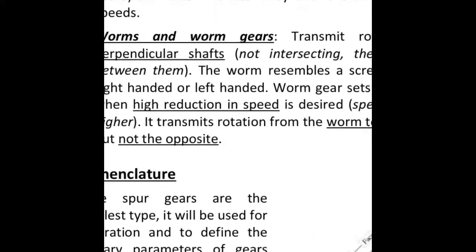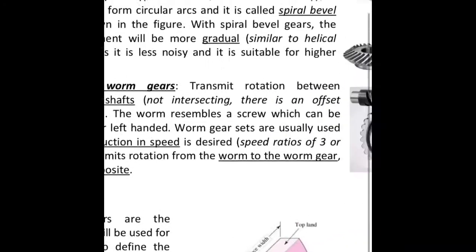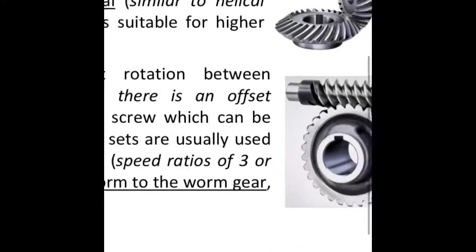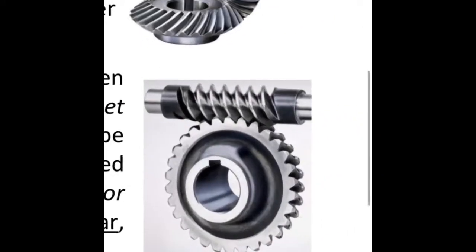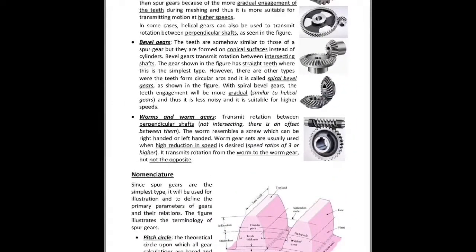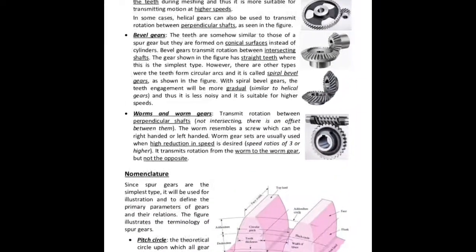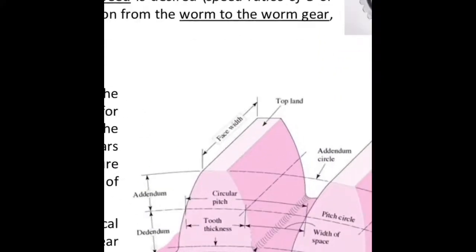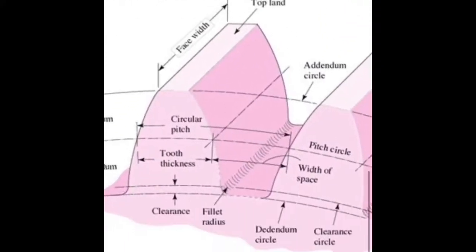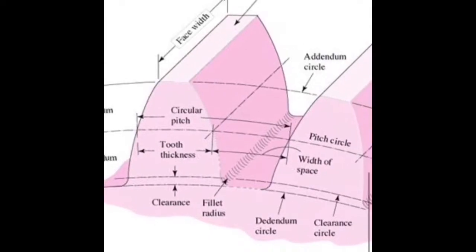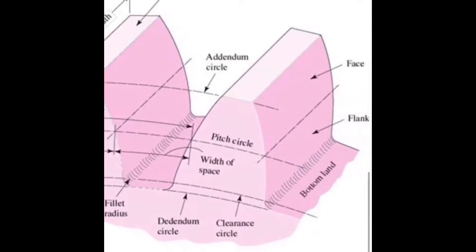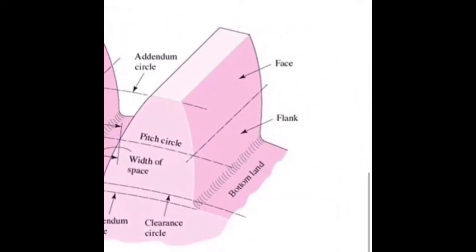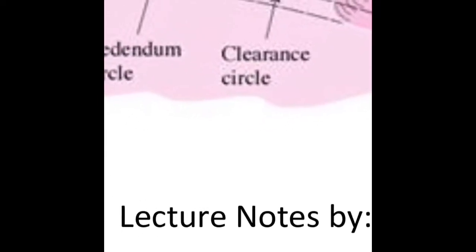As shown in the figure, such an arrangement is referred to as rack and pinion, and it is commonly used in the steering systems of automobiles. Types of gears: there are four principal types of gears. Spur gears are the simplest type. The teeth are parallel to the axis of rotation and, as seen in the figure, it transmits rotation between parallel shafts.